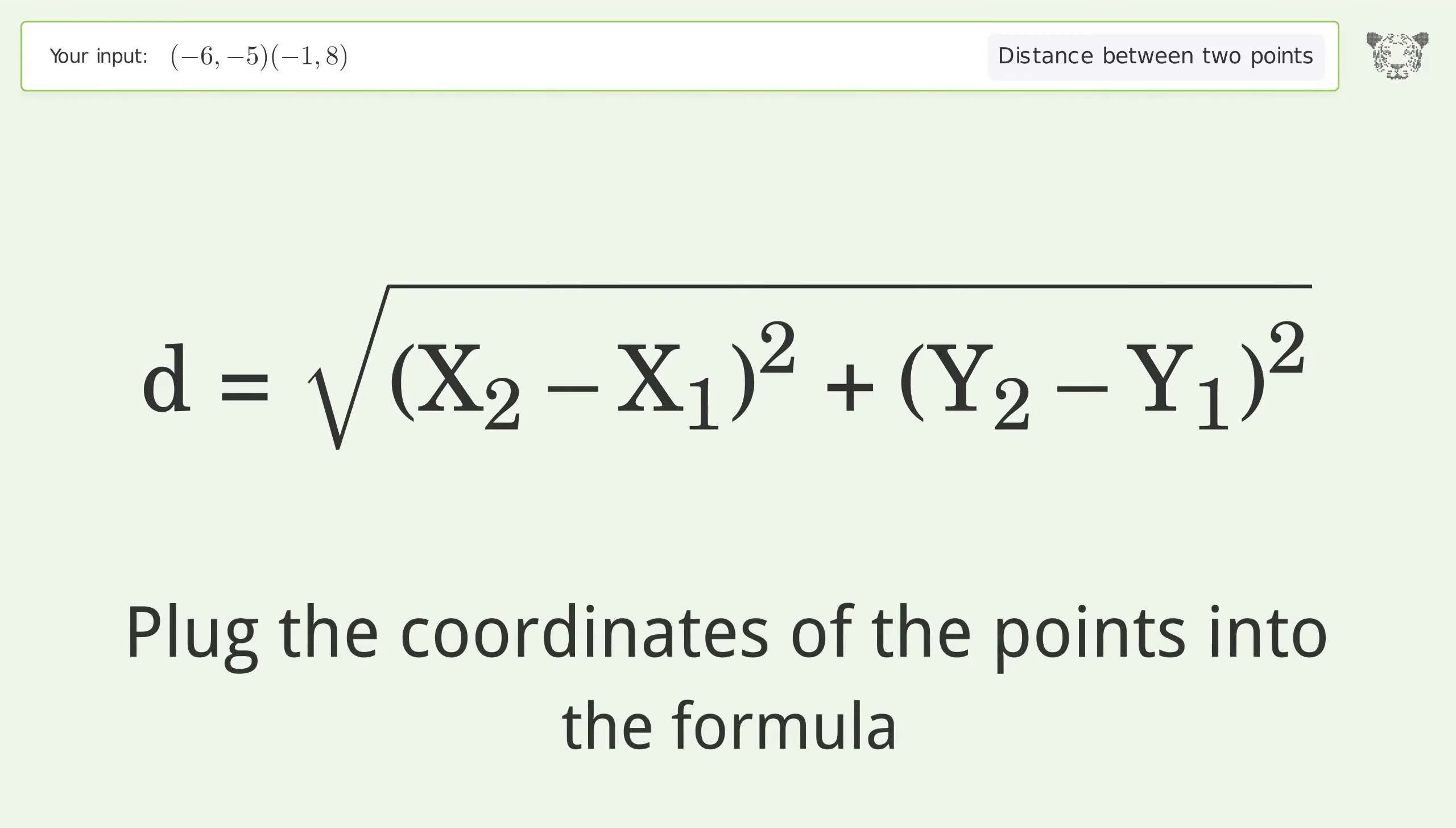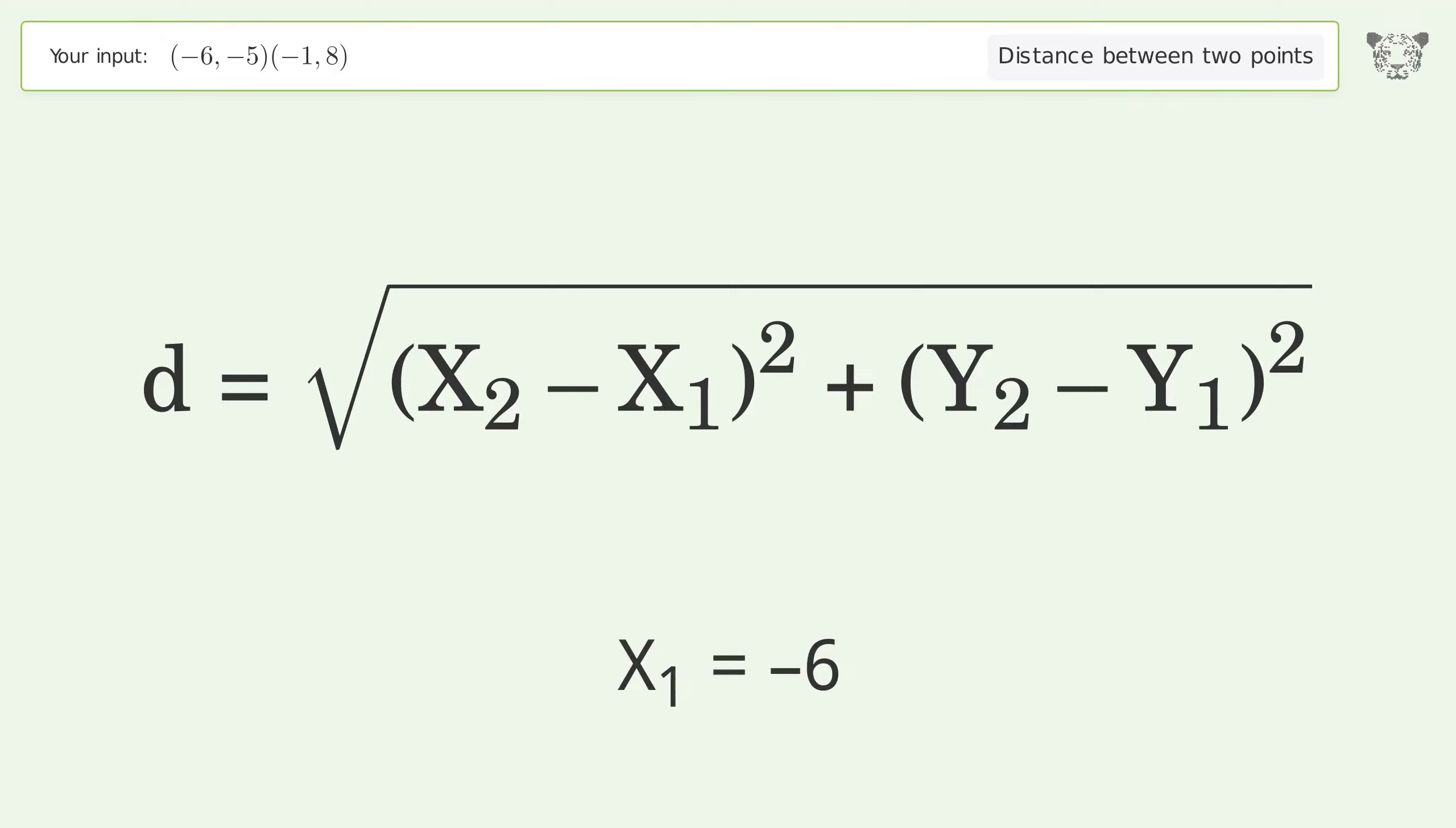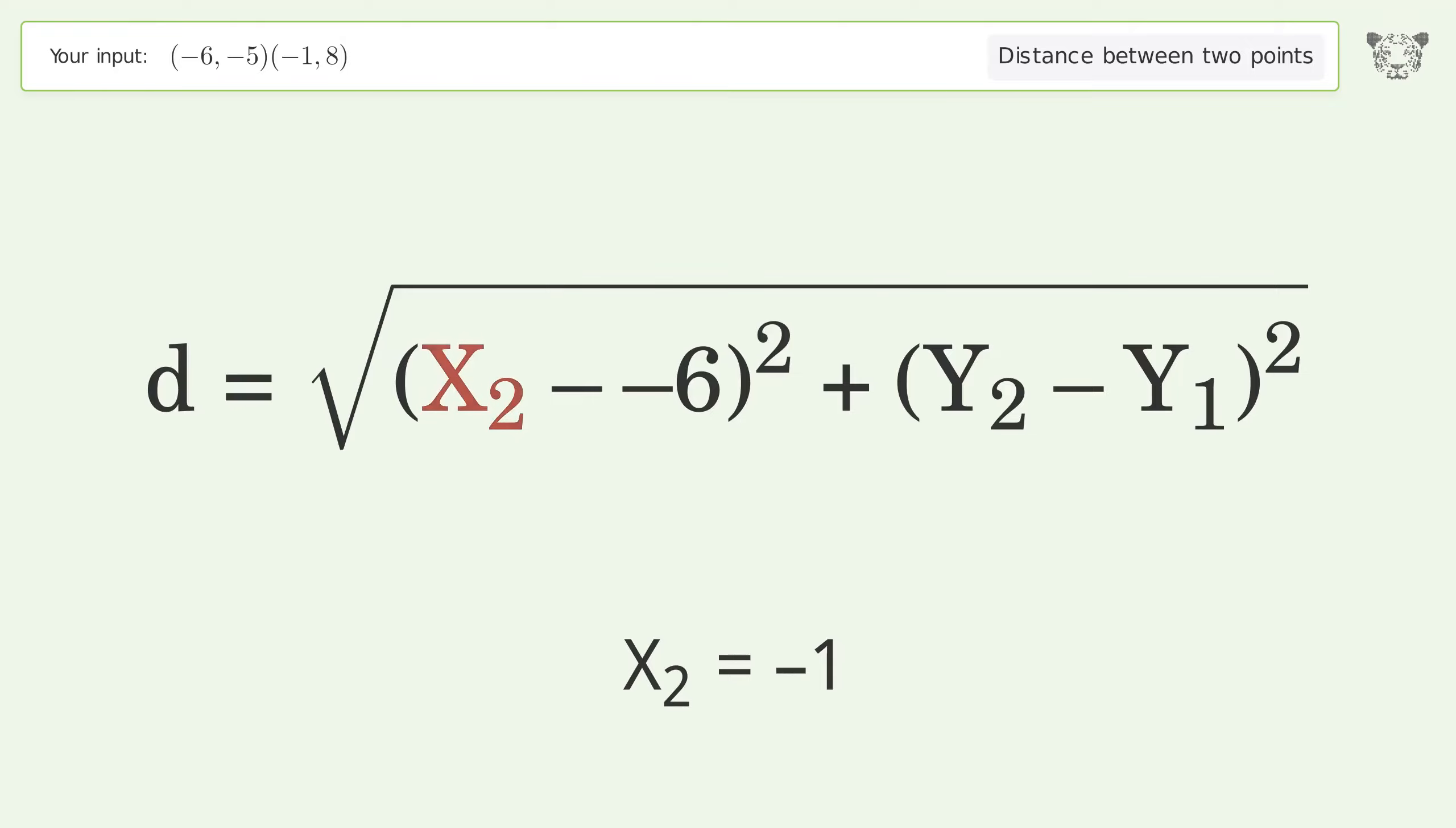Plug the coordinates of the points into the formula. x1 equals negative 6, x2 equals negative 1, y1 equals negative 5, y2 equals 8.